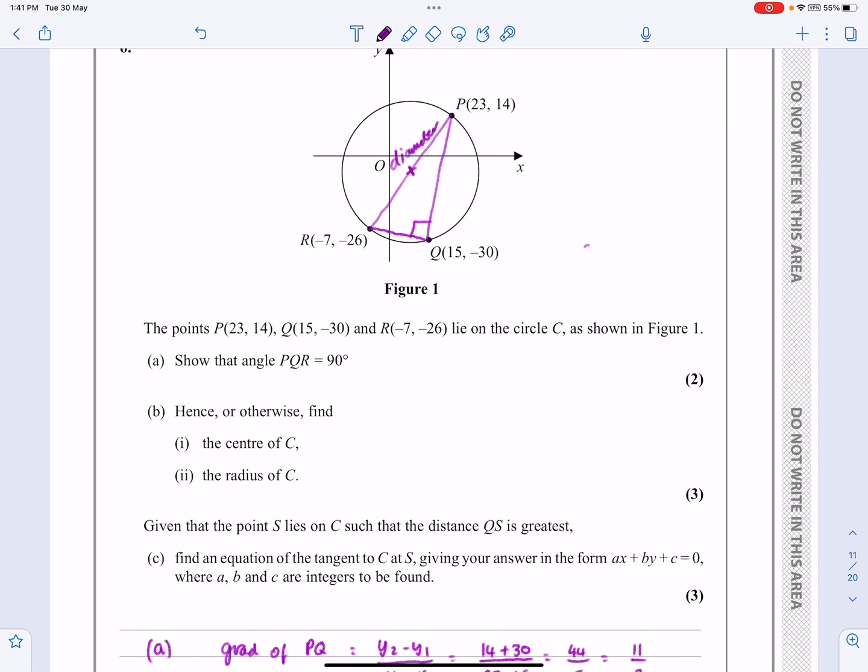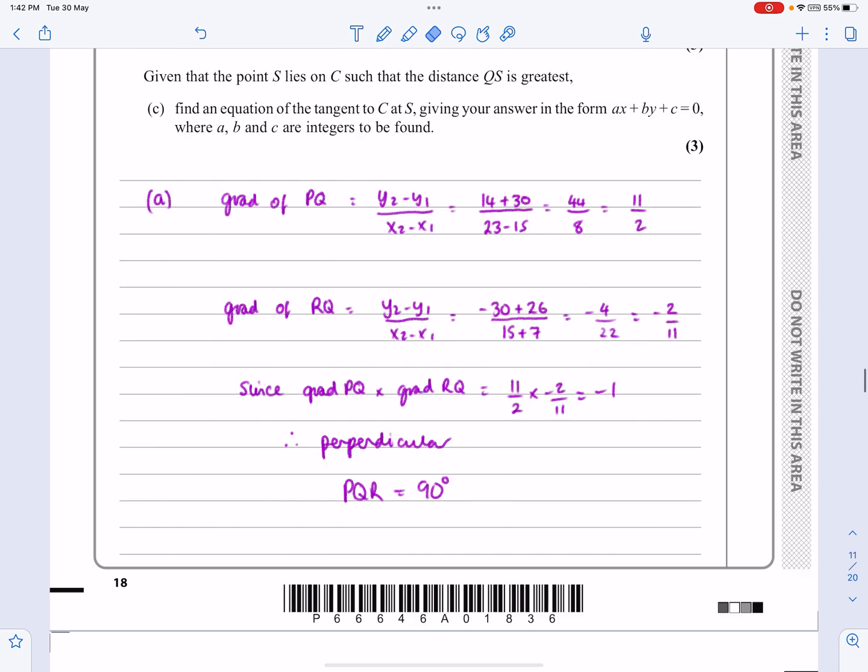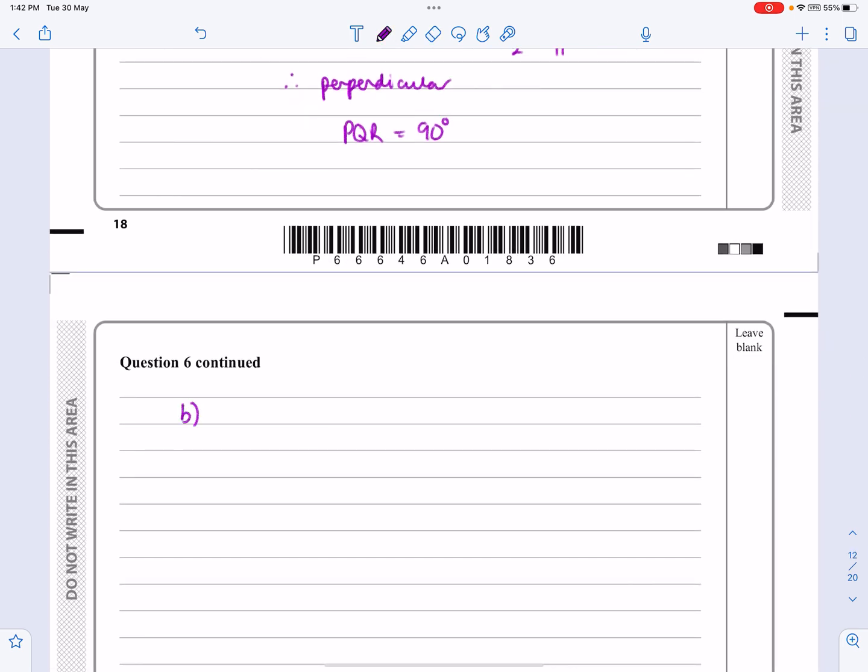Again, I now know what I'm doing for my game plan here. Tell them that PR is the diameter, and then work out the midpoint of PR will also be the centre of the circle. I'm not leaving that on the diagram, but I am going to now say that to the examiner.